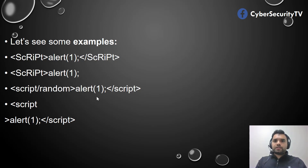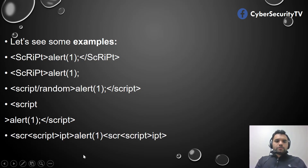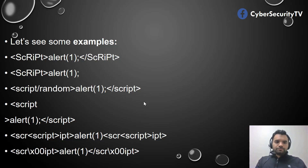The fifth option is quite interesting — you write two script tags, nesting one script inside another. This is a pattern that not all filters account for. The last technique is inserting a null character between the letters of 'script,' so the application would still treat it as a script tag but the filter wouldn't recognize it as one because of the null character in between — and that's how you can bypass the filter.